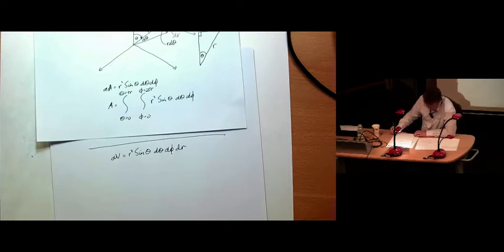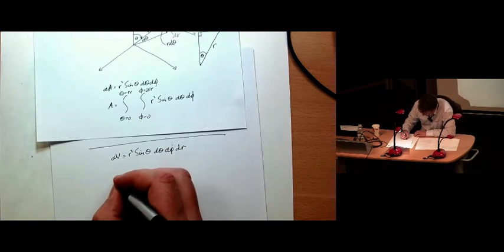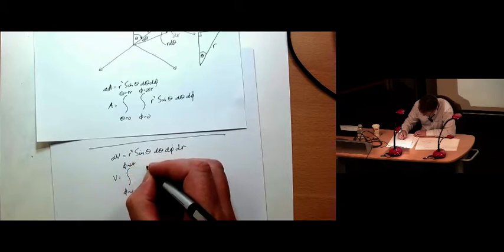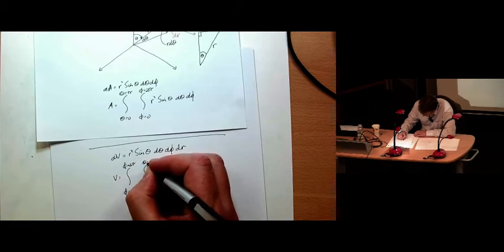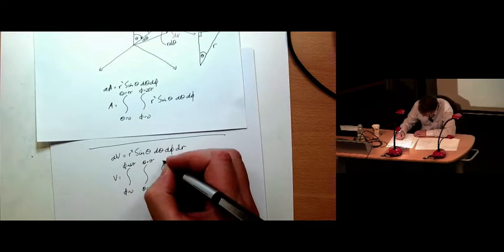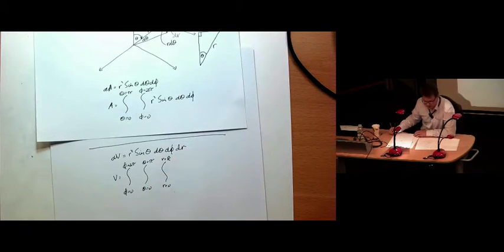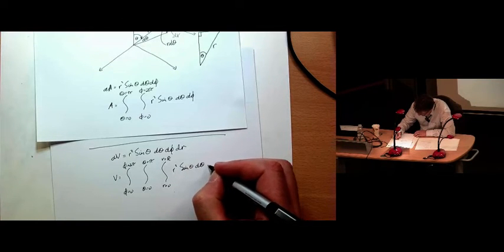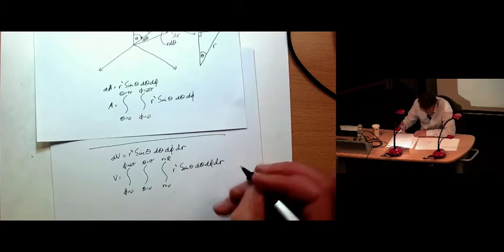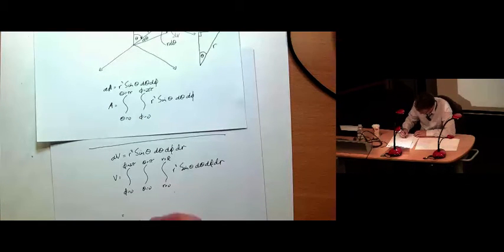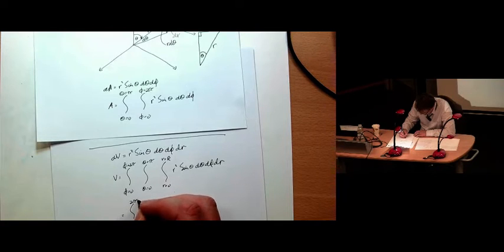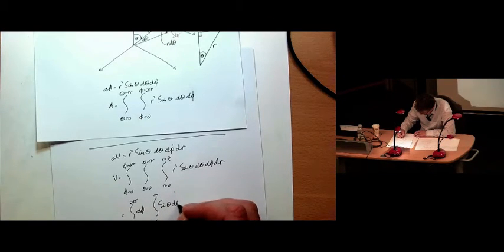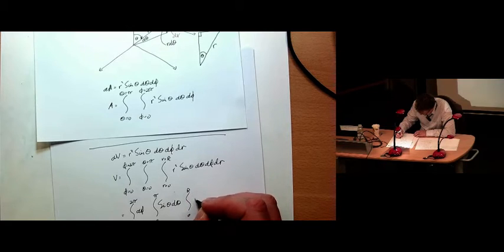So again, we can integrate this. So what is the volume then? So I need to integrate phi from 0 to 2 pi. I need to integrate theta from 0 to pi. And I need to integrate r from 0 to r equals the radius of my sphere, big R, whatever that might be, of r squared, sine theta, d theta, d phi, d r. So again, I can split this all up. The integral from 0 to 2 pi, d phi. The integral of 0 to pi of sine theta, d theta. And the integral from 0 to big R of r squared, d r.